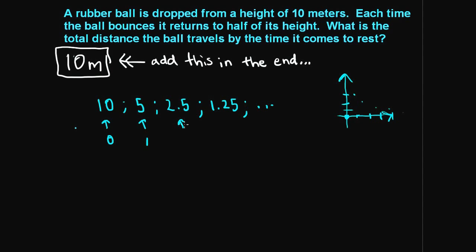Now we want to ask ourselves, can we find a pattern here? The pattern is fairly simple to recognize. Each term is multiplied by 1/2 to get the next term. 10 times 1/2 is 5, 5 times 1/2 is 2.5, 2.5 times 1/2 is 1.25. So there is a pattern - this 1/2 we call the common ratio, so r is equal to 1/2.